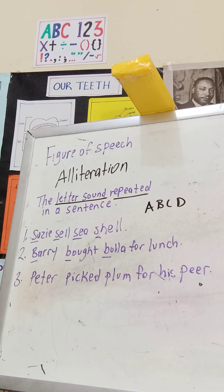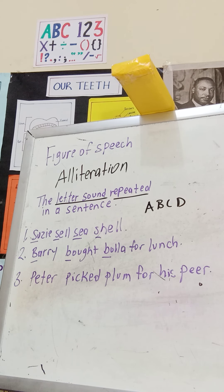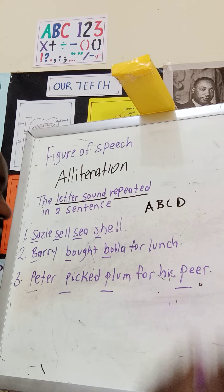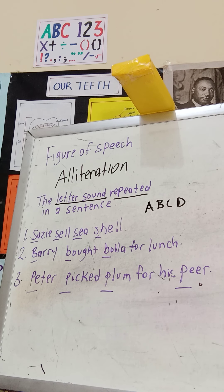'Peter picked plums for his peer.' Now 'peer' — P-E-E-R — refers to the friends or people we associate with, so those friends in your class are your peers. Be careful: P-E-A-R is the fruit, P-E-E-R is a person. You can see alliteration playing out across these examples because you see the same letter sound being repeated.